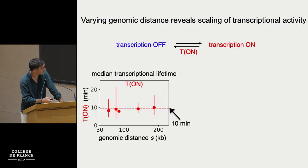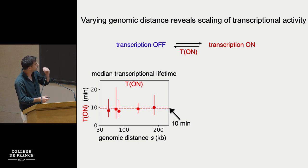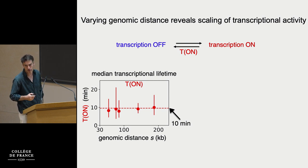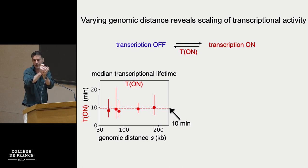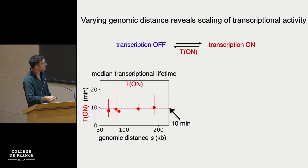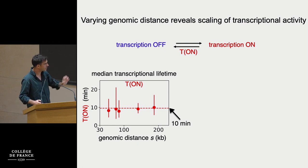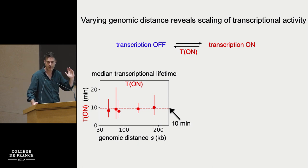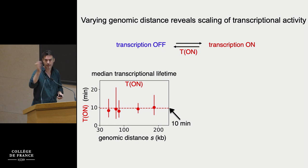How does genomic distance influence transcription? Approximating by two states — transcriptionally off and on — once you're in the transcriptionally on state, what is the lifetime you stay there, and how does that depend on the nominal distance between enhancer and promoter? The answer is: it does not depend on that distance. Once you're active, once you're in a confined state, it doesn't matter how much DNA is dangling in a loop behind you — you'll just be active. The lifetime for this system is of the order of ten minutes.